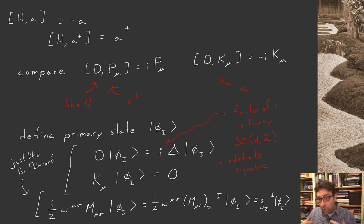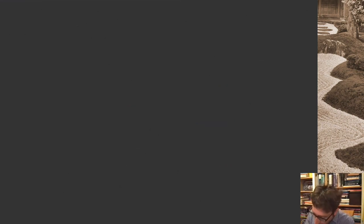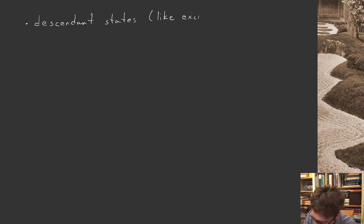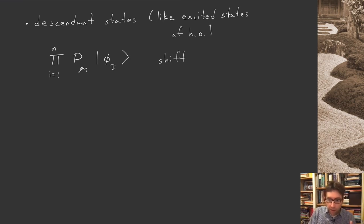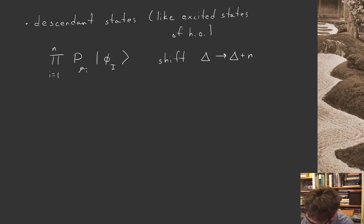That's a primary state. Now we can think about excited states — we call them descendant states, analogous to excited states of the harmonic oscillator. Instead of acting with a-dagger, we now act with some product of the momenta P_mu. The eigenvalue will shift just like it shifted for the harmonic oscillator: you go from delta to delta plus some integer n. So that's how we think about representations of the conformal symmetry algebra in terms of quantum states.